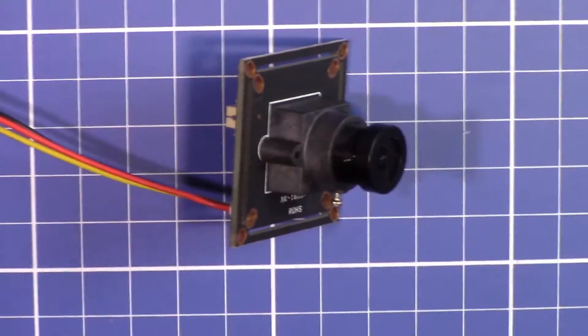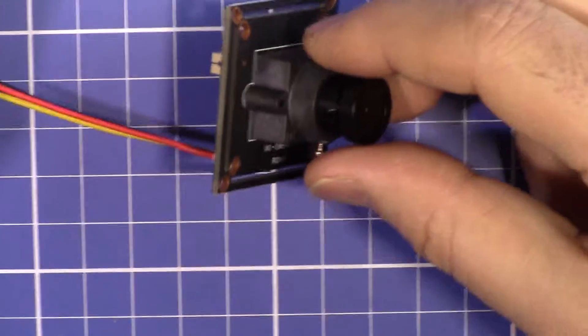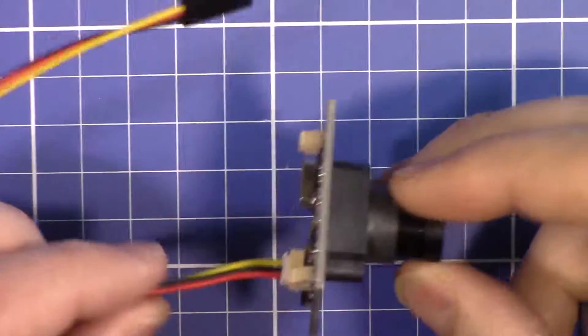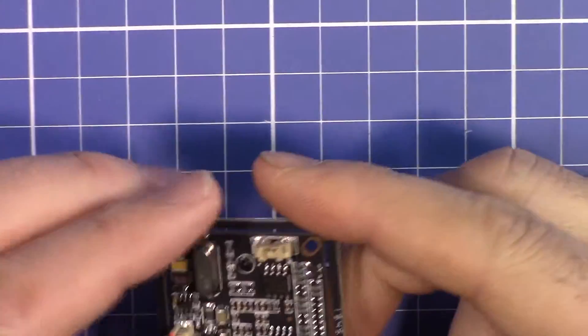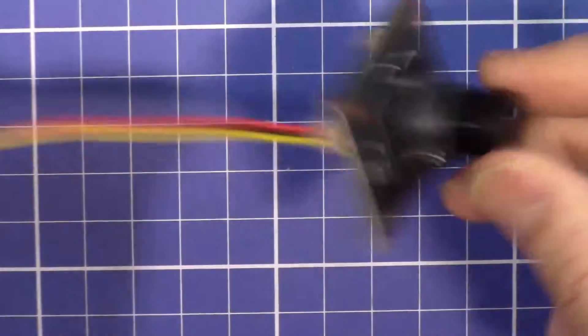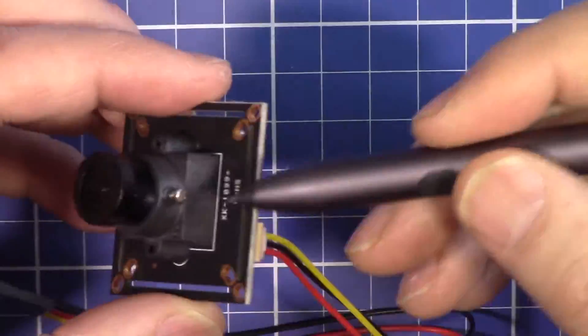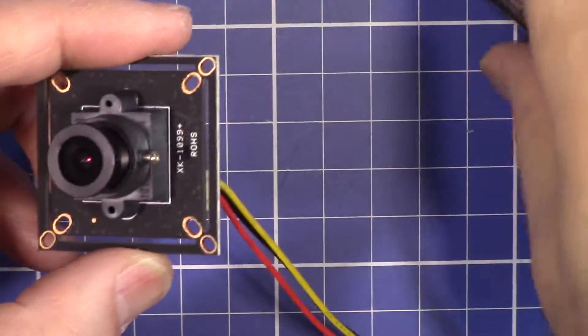Hi, welcome to a video from Robojax. In this video I'm going to show you this 1000 TVL Sony CCD compact camera for FPV. One of the main characteristics of this camera is that it is very wide angle.